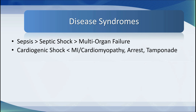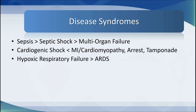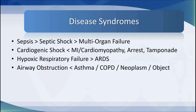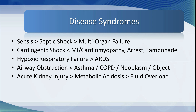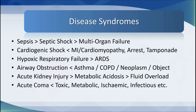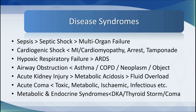We also see cardiogenic shock caused by myocardial infarction, cardiomyopathy, cardiac arrest, or cardiac tamponade; hypoxic respiratory failure manifesting as acute respiratory distress syndrome, or airway obstructive disease caused by asthma, COPD, neoplasm, or inhaled objects; acute kidney failure manifesting with metabolic acidosis, fluid overload, and electrolyte abnormalities; acute coma, which may be toxic, metabolic, ischaemic, or infectious; and metabolic and endocrine syndromes such as diabetic ketoacidosis, thyroid storm, thyroid coma, and adrenal crises.